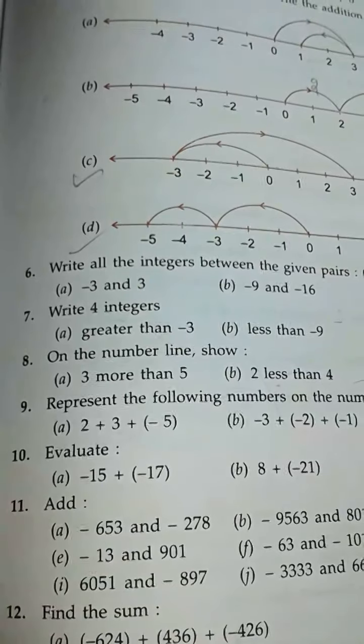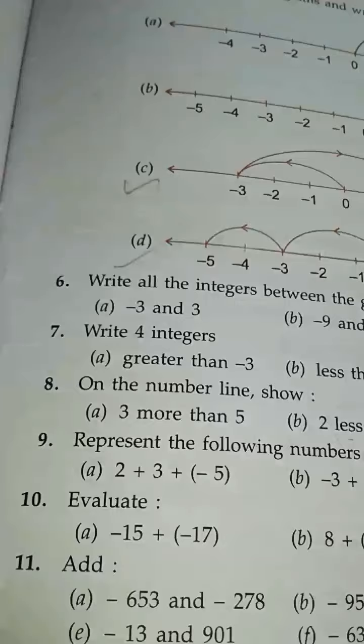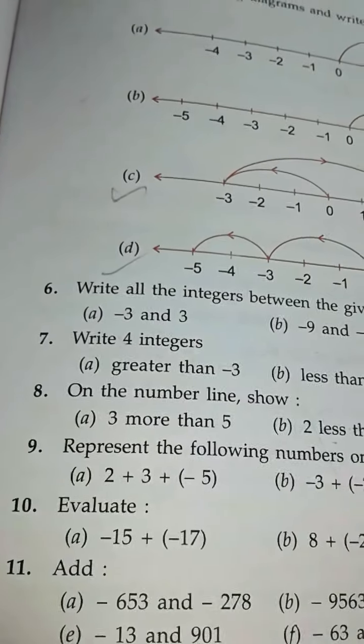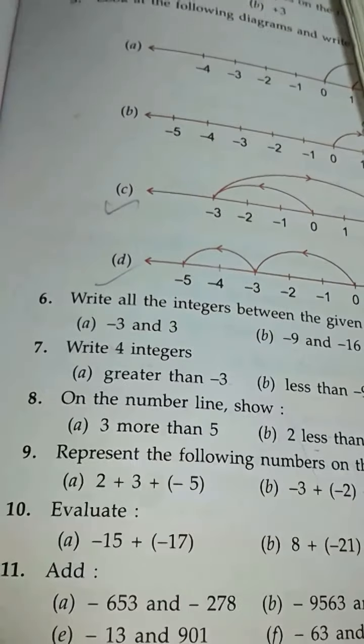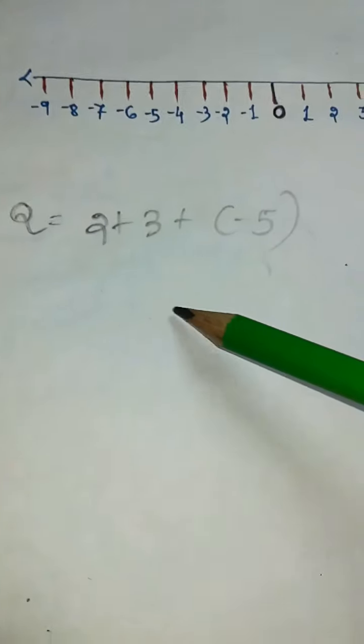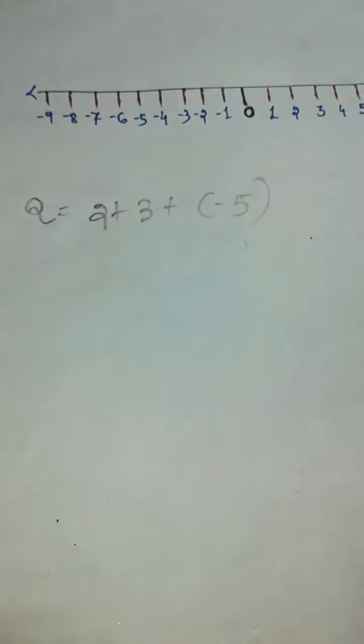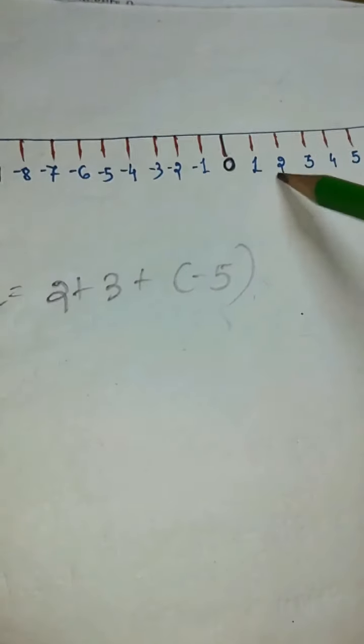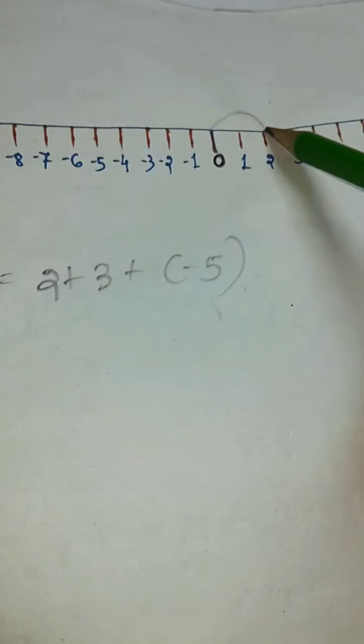Then comes to question 9: represent the following numbers on the number line. Let's see the solution. Here, the question is 2 plus 3 plus minus 5. So we start from 0, 0 to 2.